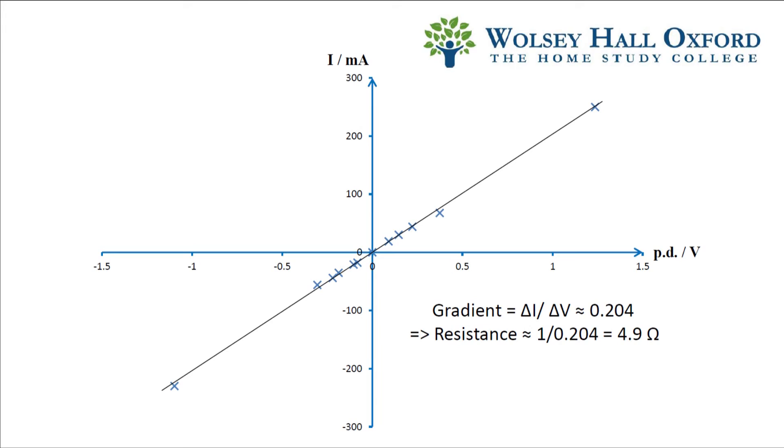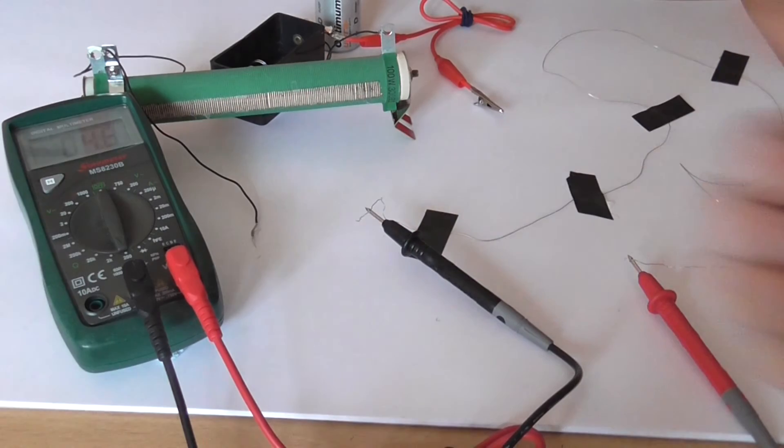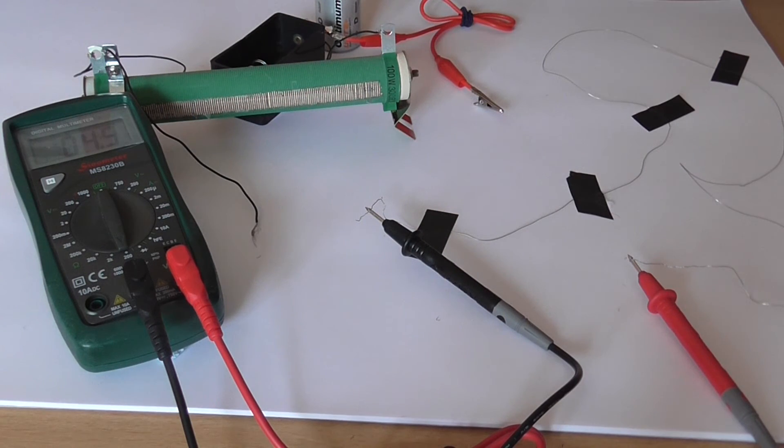We can verify this by using the ohmmeter. You can see the leads are connected to the ends of the wire, and the dial is turned to the 200 ohm range, which is the lowest range for the ohmmeter. The reading is 4.9 ohms.